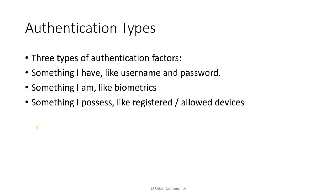Let's talk about the authentication types. There are basically three types of authentication factors. Number one: something you know, meaning the username or password. Number two: something you are, like biometrics such as fingerprints. Number three: something you possess, like a registered or allowed device.